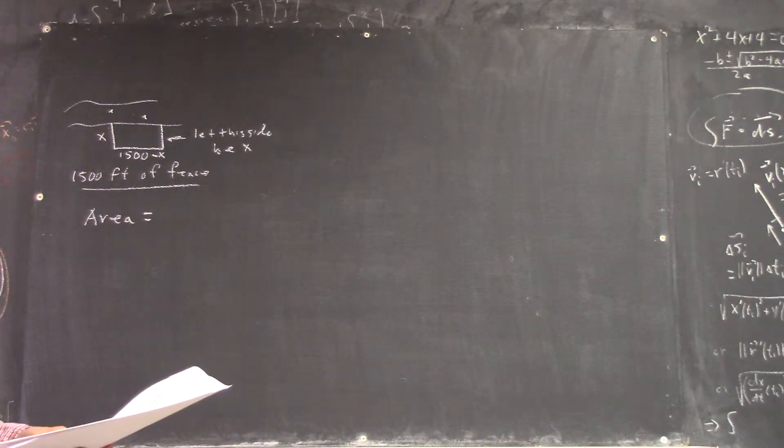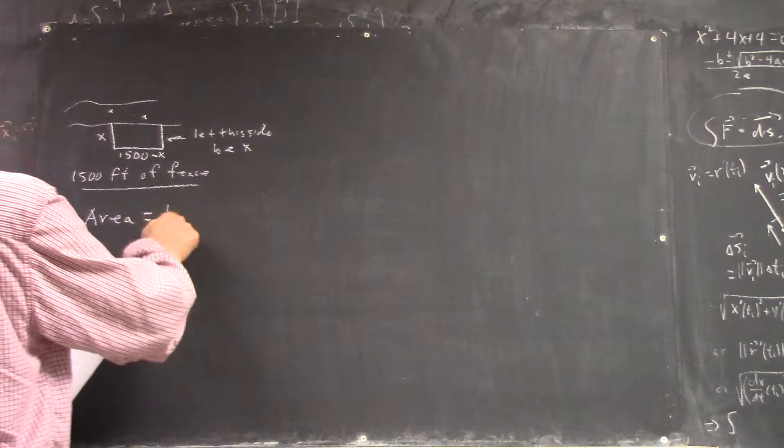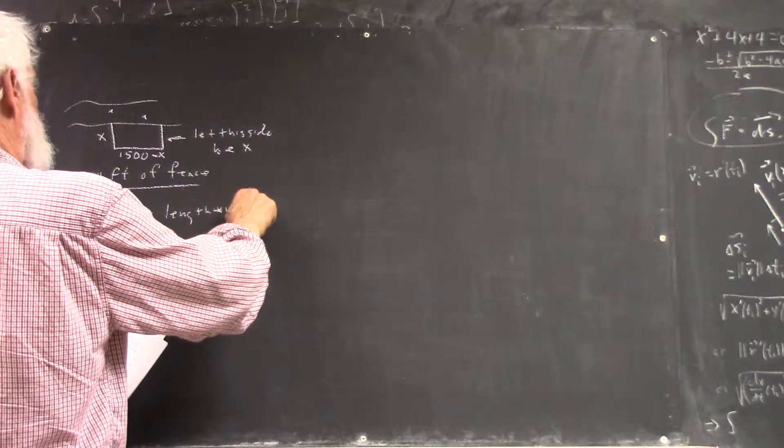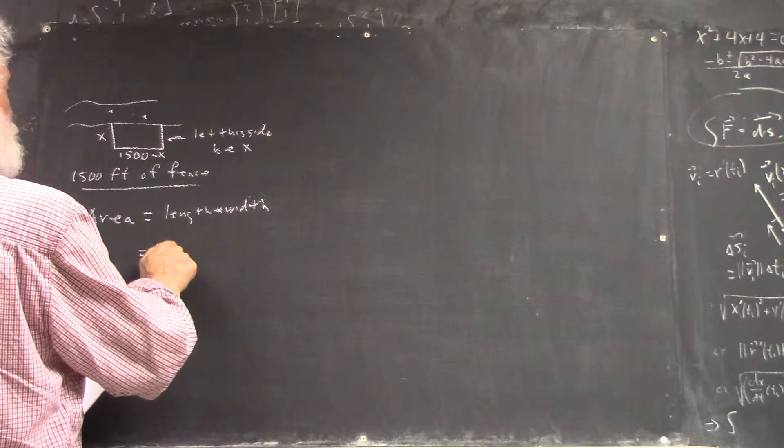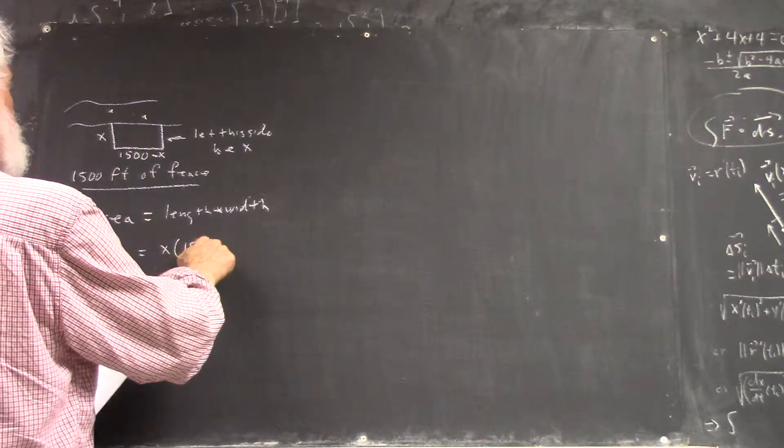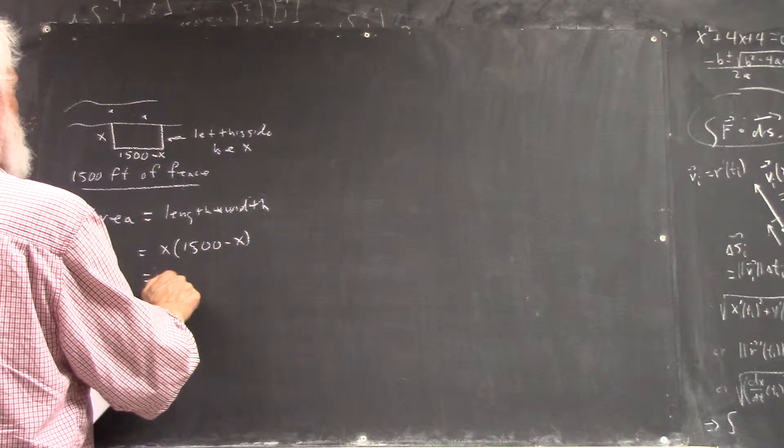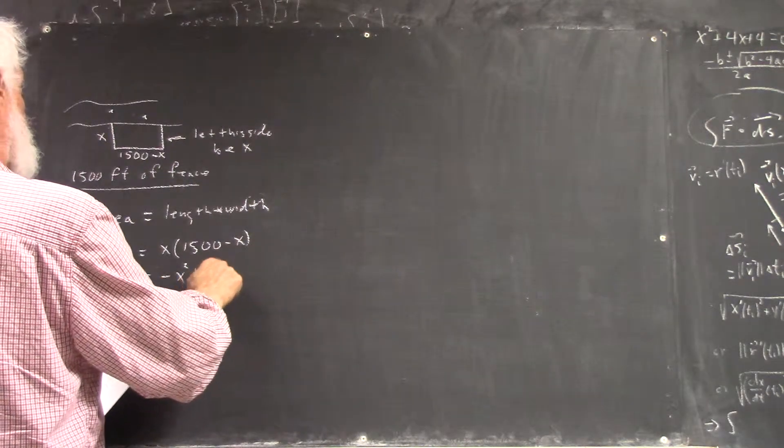It's a rectangle. The area is length times width. Equals x times fifteen hundred minus two x, which equals negative two x squared plus fifteen hundred x.